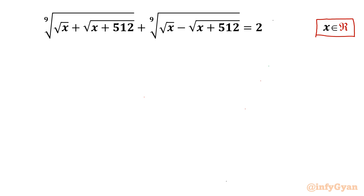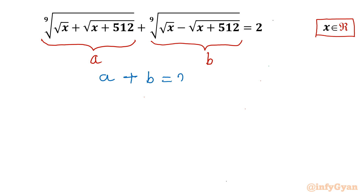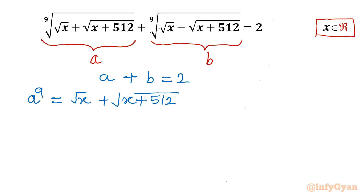Let's get started by writing a substitution. I will consider the first radical term as a and the second one as b. Now I will frame two equations. First: a plus b equals 2. And from the substitution: a⁹ equals √x plus √(x+512), and b⁹ equals √x minus √(x+512).